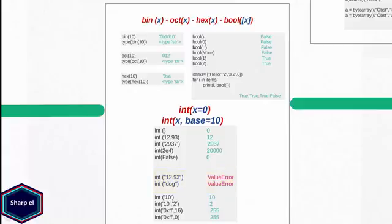The second argument of int defines the base of the first argument, with a default value of 10. If you set base to 2 the first argument must be a binary number, and int converts it to an integer with base 10. Similarly you can pass a hexadecimal number with base 16. If you set base equal to 0, Python will choose the suitable base value on its own.